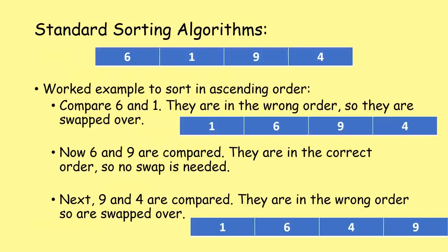Worked example sorting in ascending order. Compare 6 and 1 - wrong order, so they're swapped. List is now 1, 6, 9, 4. Compare 6 and 9 - correct order, no swap. Compare 9 and 4 - wrong order, swapped. If you're writing this in a test, draw arrows to show what numbers you're swapping and show the lines as you go through it - make it clear you know what you're doing.